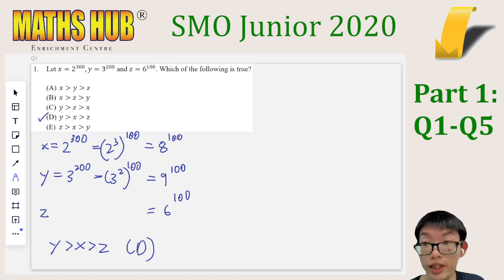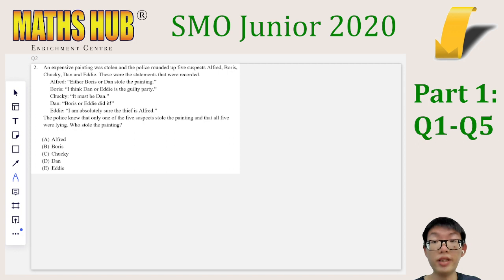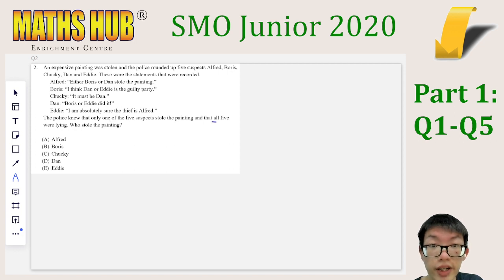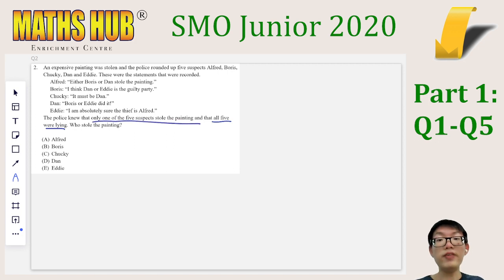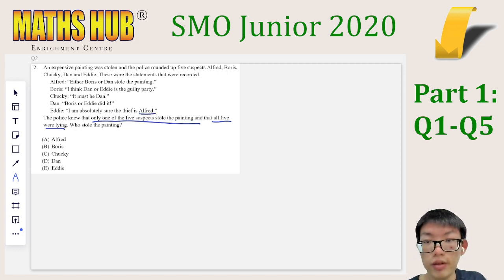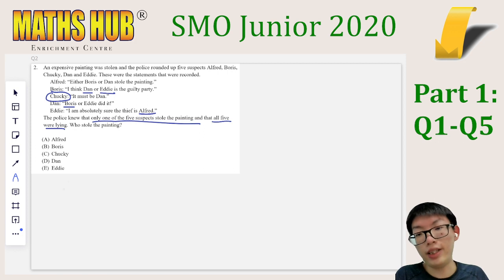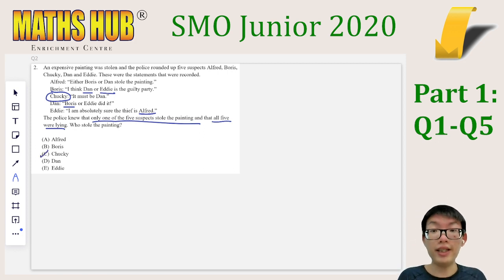Moving ahead to question 2, this is a logic puzzle — quite an easy one, because we have 5 suspects and each of them makes a statement. We are told that only 1 of them stole the painting, and all 5 were lying. So anyone that is accused didn't do it. Alfred is accused, so he didn't do it. Boris is accused, so he didn't do it. Same for Dan and Eddie. The only person who is not accused is Chucky, so he must have been the one that stole the painting. The correct answer is option C.